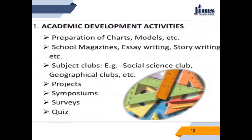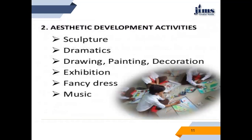Academic development activities include preparation of charts, models, school magazines, essay writing, story type writing competitions, subject clubs such as social science club and geography clubs, projects, symposiums, surveys and quiz. Aesthetic development activities include sculpture, dramatics, drawing, painting, decoration, exhibition, fancy dress and music.